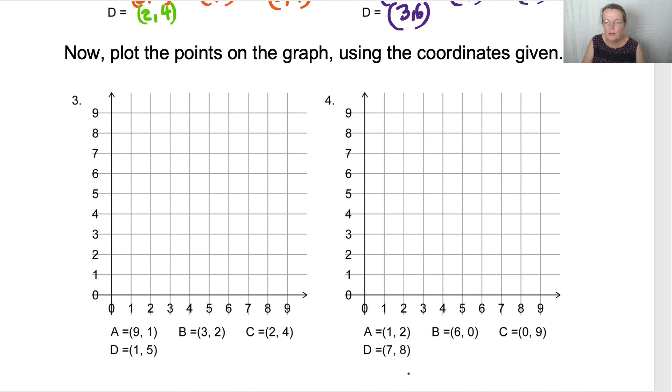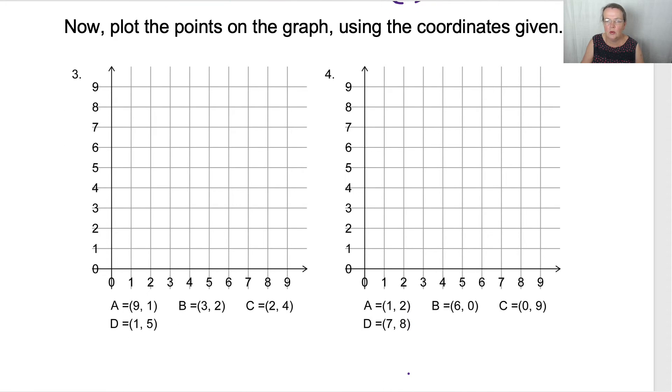Now plot the points on the graph using the coordinates given. Let's use a nice bright pink, shall we? Nine, one. So we go across nine and up one. I'm going to write A next to it.